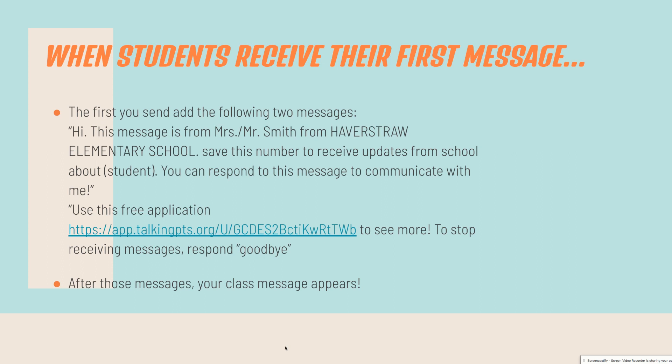When students receive their first message, they're going to get the following two messages included. With your particular name and school — I did a sample message — what I saw is: 'Hi, this message is from Mrs. Smith from Havistro Elementary School.' That was the school I used as a sample. 'Save this number to receive updates from school about' and then the student's name. 'You can respond to this message to communicate with me. Use this free application' — then they get a link. 'To stop receiving messages, respond goodbye.' After that, the message I composed actually appeared. It's as simple as that.